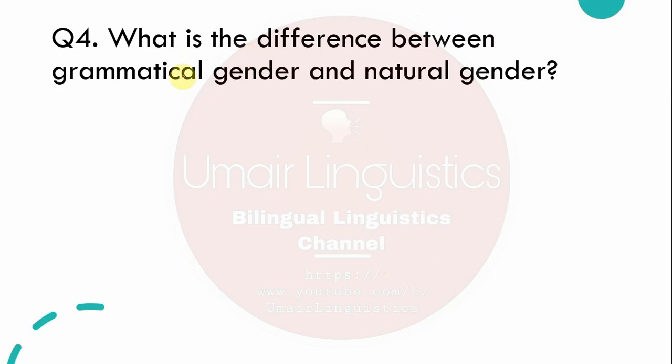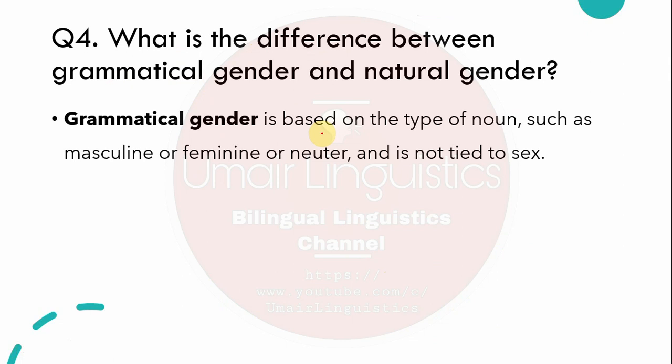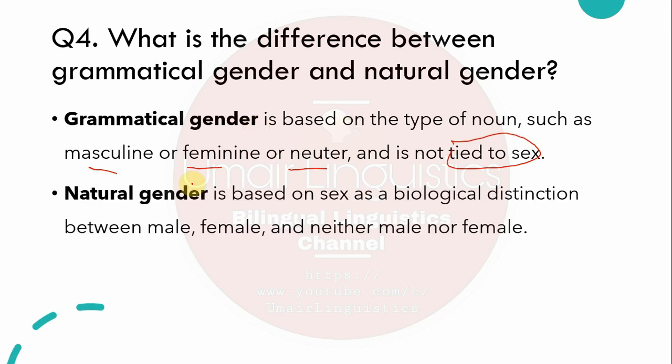Question 4: What is the difference between grammatical gender and natural gender? Grammatical gender is based on the type of noun — masculine, feminine, or neuter — and it is not tied to biological sex. For example, 'table' has neuter gender in English, but in Urdu it is masculine. In Arabic, 'book' is masculine while in Urdu 'book' is feminine. Many languages have only two genders, so even non-living things are classified as masculine or feminine.